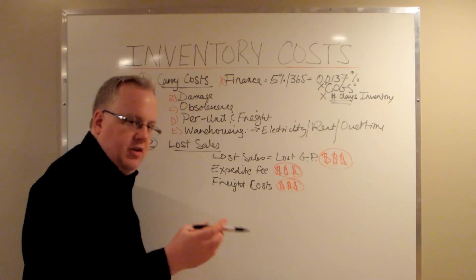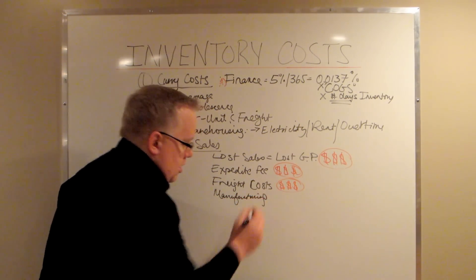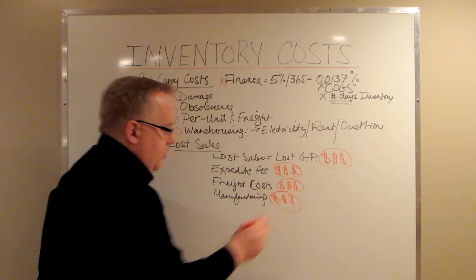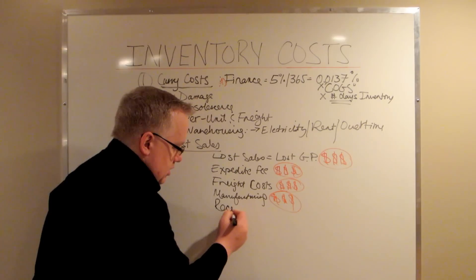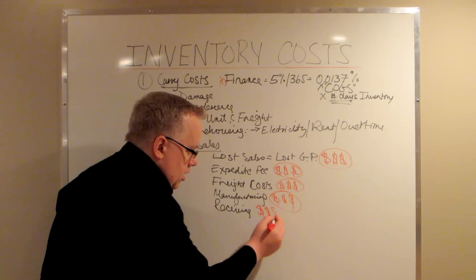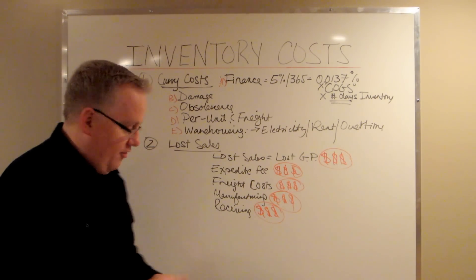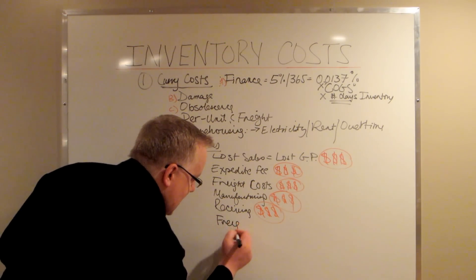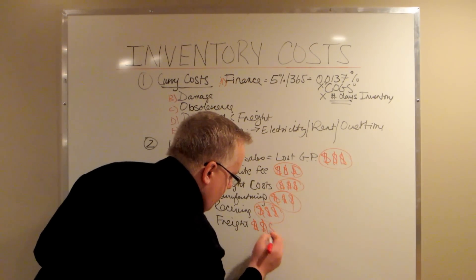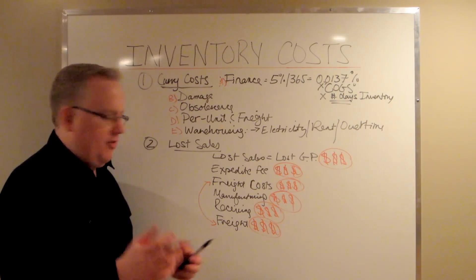Once those parts get into your warehouse, if you're a manufacturer, you're going to have additional manufacturing costs. Even if you're not a manufacturer, you're going to have overtime pertaining to receiving and packaging — that's going to be more money. Now, if you're really late and you've got a really upset customer you can't afford to lose, you're going to have to pay freight again to rush parts out to them. So you're actually paying two freight costs — the freight double whammy, if you want to call it.